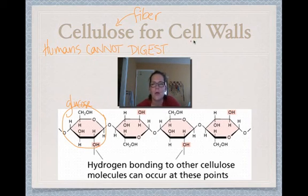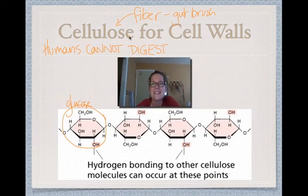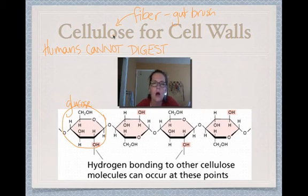Cellulose is kind of like a gut brush — instead of a toothbrush, it's a gut brush. It is really important to get in your diet. Plants that contain lots of cellulose often have other good qualities too, like kale, lettuce, mustard greens, collard greens, and spinach. You can't digest it, so it goes through and just cleans out your system.